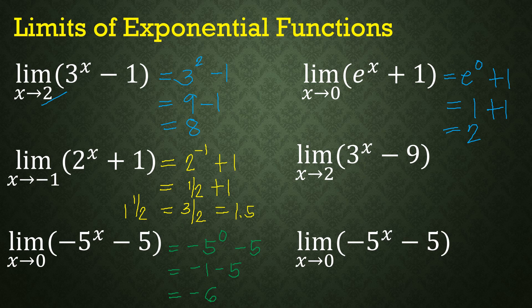Another example: the limit of 3^x - 9 as x approaches 2. Substituting: 3^2 - 9 = 9 - 9, which equals 0.